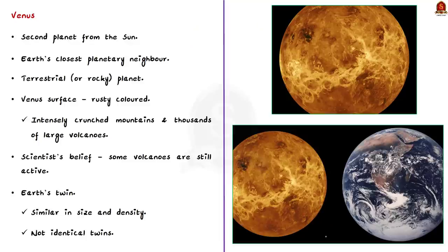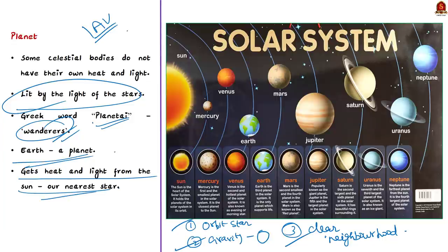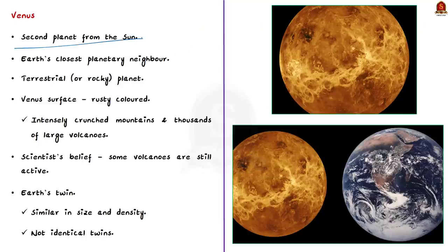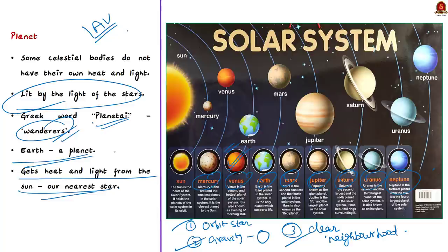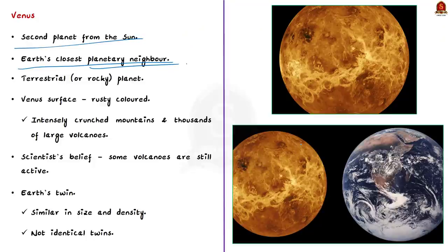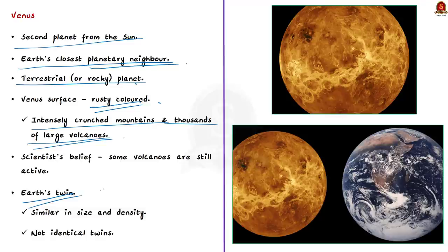There are eight planets in our solar system. In order of distance from the sun, they are Mercury, Venus, Earth, Mars, Jupiter, Saturn, Uranus and Neptune. Venus is the second planet from the sun and Earth's closest planetary neighbor. It is one of the four inner planets, hence called a terrestrial planet. The surface of Venus is rusty colored with intensely crunched mountains and thousands of large volcanoes. Venus is often called Earth's twin because it is similar in size and density; however, these are not identical twins as there are radical differences between the two planets.